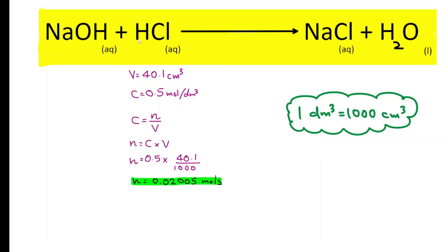Now let's look at this balanced chemical equation. You can see the ratio of sodium hydroxide to hydrochloric acid is 1:1. Because this is balanced, it's 1 is to 1. So if I have 0.02005 moles of hydrochloric acid, obviously the number of moles of sodium hydroxide should also be exactly the same, 0.02005 moles.